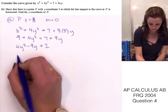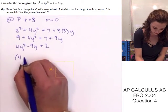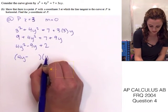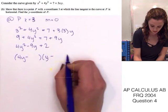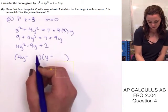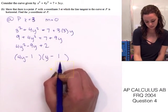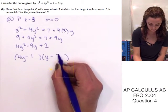And, we can factor this. So, we have 4y minus and then we'll have y minus. We can put 4y minus 1 and y minus 2.